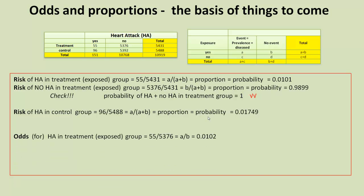We also can consider odds, which are slightly different to risks, because they're not concerned with proportions. They're concerned just with the two values in the group. So, we now take 55 and divide that just by the number who didn't have a heart attack in the treatment group, which is 5,376, which gives us just 1%.